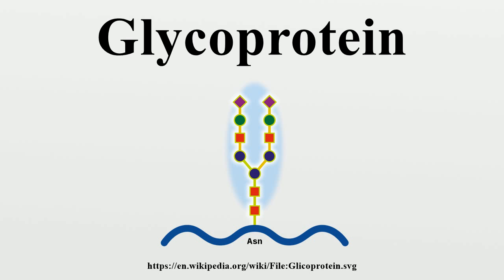Glycoprotein 41 and glycoprotein 120 are HIV viral coat proteins. Soluble glycoproteins often show high viscosity, for example in egg white and blood plasma. Miraculin is a glycoprotein extracted from Synsepalum dulcificum, a berry which alters human tongue receptors to recognize sour foods as sweet. Variable surface glycoproteins allow the sleeping sickness trypanosome, a parasite, to escape the immune response of the host.